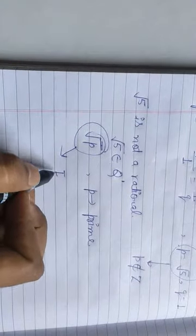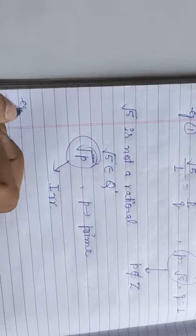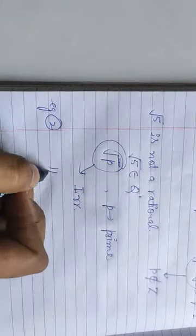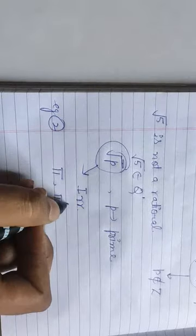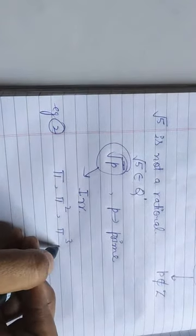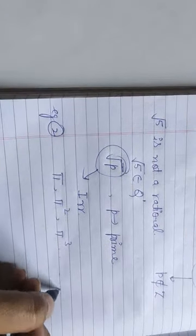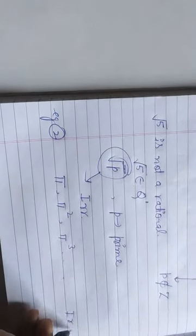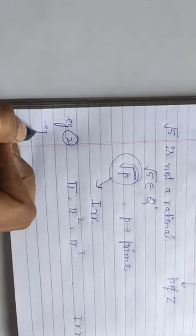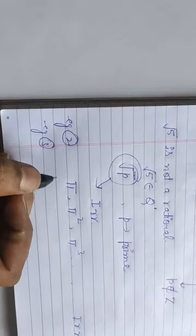Example 2: If we take pi, pi square, pi cube, and many powers of pi, all are irrationals.